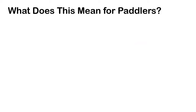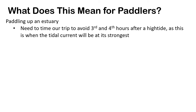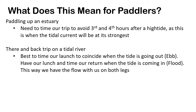What does this mean for paddlers? If we're planning a trip paddling up an estuary, we need to time our trip to avoid the third and fourth hour after a high tide, as this is when the tidal current will be at its strongest. If we're planning a there-and-back trip on a tidal river, we're best to time our launch to coincide when the tide is going out — on the ebb — have lunch, and time our return when the tide is coming in, on the flood.